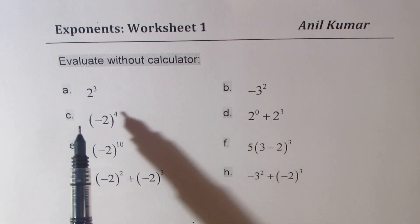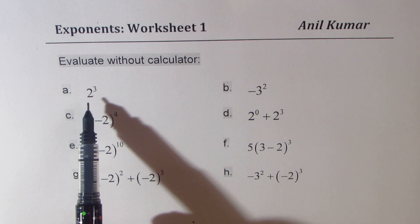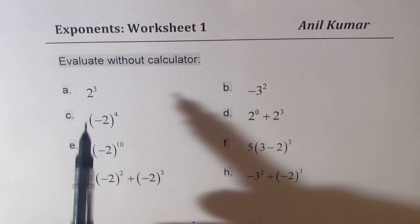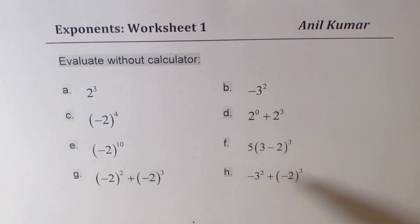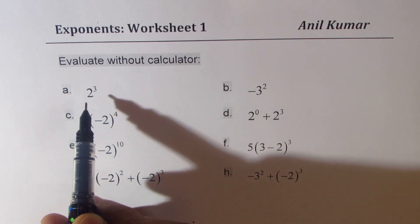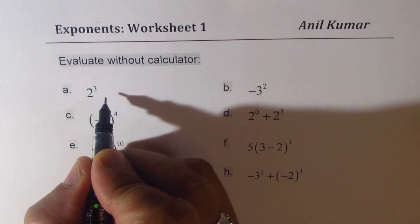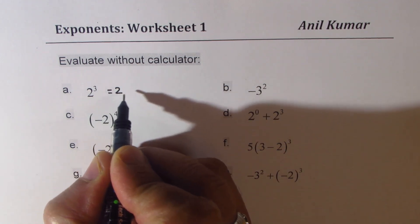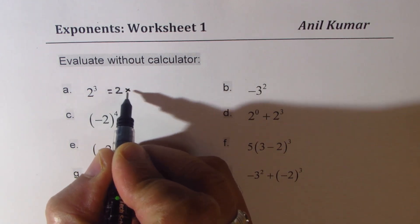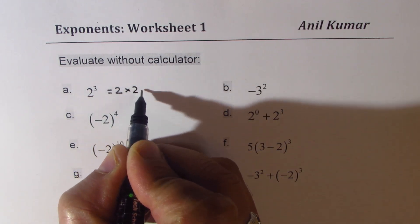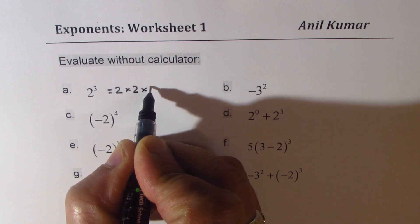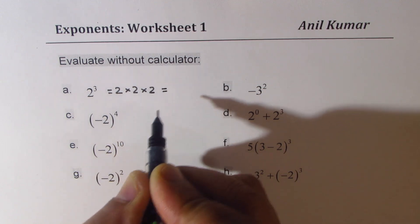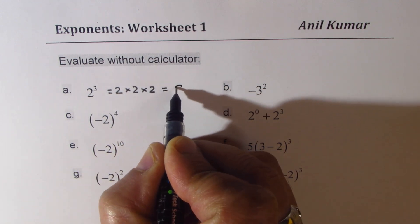The very first one is 2 cubed. So when the power is 3, we could also call it cube. 2 cubed really means 2 times 2 times 2, and that gives you the answer as 8.